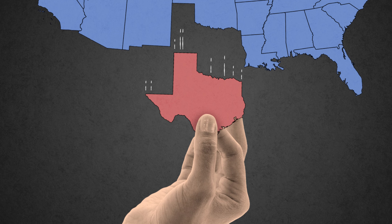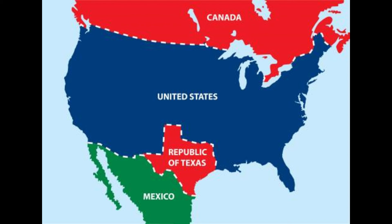The Texas annexation was the 1845 annexation of the Republic of Texas into the United States. Texas was admitted to the Union as the 28th state on December 29, 1845. The Republic of Texas declared independence from the Republic of Mexico on March 2, 1836. It applied for annexation to the United States the same year, but was rejected by the United States Secretary of State.